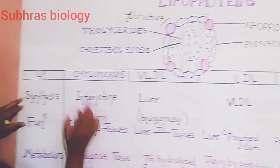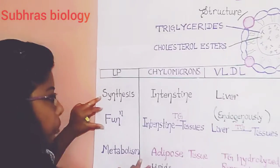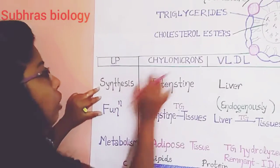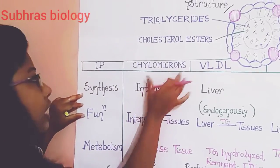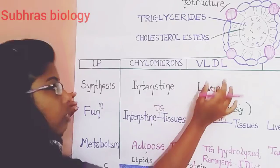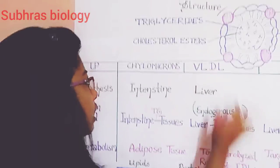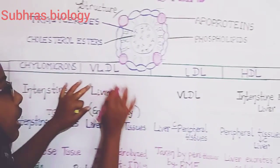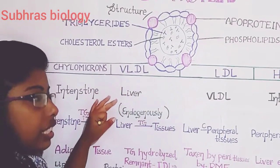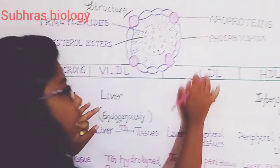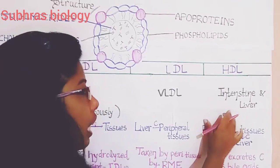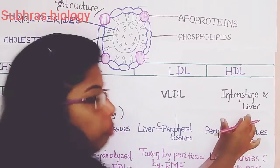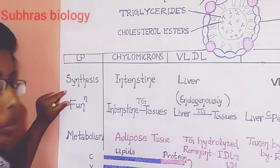For your better understanding, here is the synthesis, function, and metabolism. Synthesis means from where the chylomicrons are synthesized — from the intestine. The VLDL, very low density lipoproteins, are synthesized from the liver. And the LDL, they are synthesized from the VLDL — meaning VLDL, through an intermediate density lipoprotein, converts into LDL or low density lipoprotein. And HDL is synthesized from the intestine and the liver.